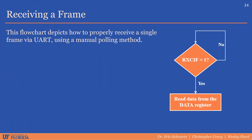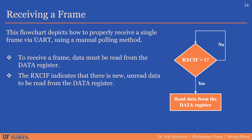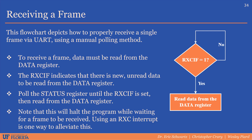Finally, let's talk about how to actually receive a frame of data. The flowchart on the right depicts one method of properly reading a received UART frame using a manual polling method. To receive a frame, data must be read from the data register. The receive complete interrupt flag indicates there is new, unread data to be read. To wait for a frame to be received, poll the status register until the receive complete interrupt flag is set, then read from the data register. Note that this method will halt the program while waiting for a frame to be received — using a receive complete interrupt would remove the need to manually poll the flag, freeing up the main program to do other things.